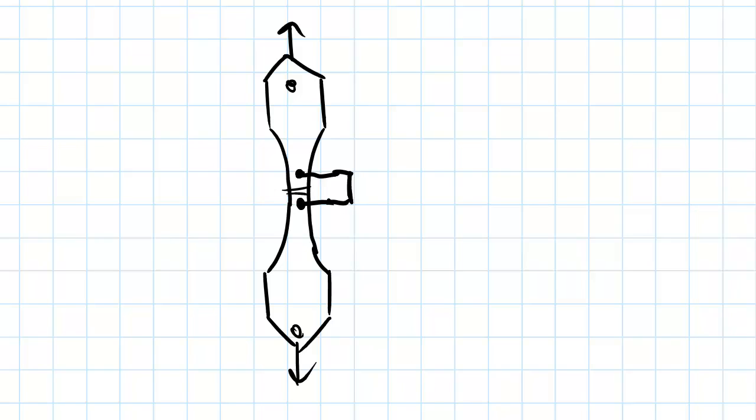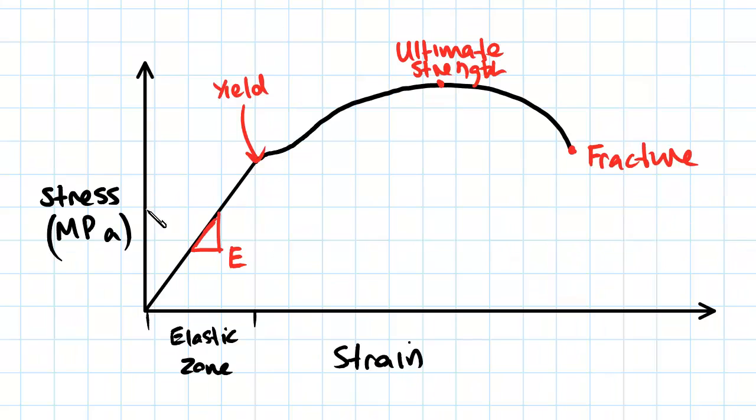So if we plot those two values together, for every stress value we get a strain value and if we plot that together we get a shape like this.